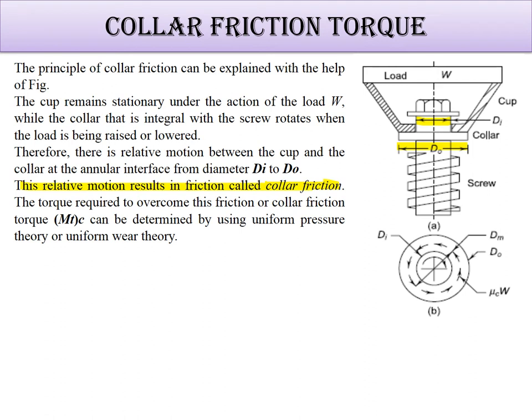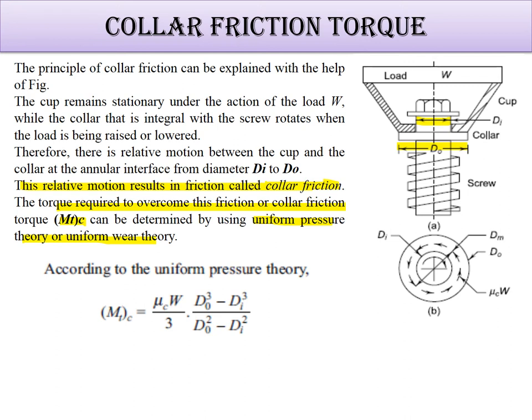The torque required to overcome this collar friction (MTC) can be determined using uniform pressure theory and uniform wear theory, which we learned in unit number one. The uniform pressure theory equation is: μc W / 3 × (Do³ - Di³) / (Do² - Di²).